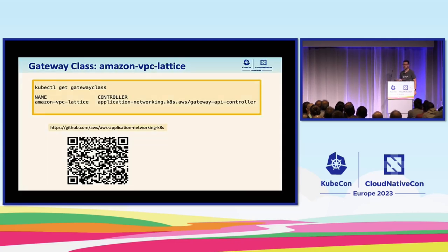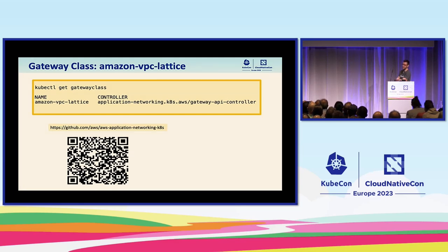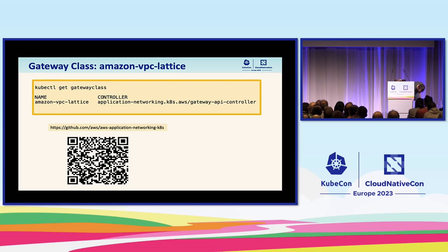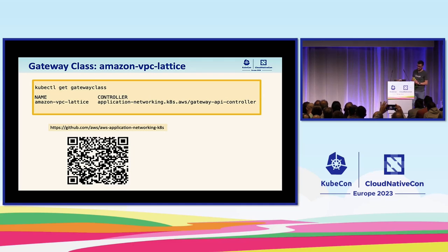Let's talk about the EKS implementation of the Gateway API through the AWS Gateway API Controller. First, we introduce a new gateway class: Amazon VPC Lattice. The AWS Gateway API Controller will reconcile gateways and HTTP routes on the Amazon VPC Lattice gateway class and create corresponding VPC Lattice resources accordingly. The TL;DR is that Kubernetes Gateway APIs are the control plane, where VPC Lattice is the data plane. We have open sourced our Gateway API Controller — here's the GitHub link and the QR code.